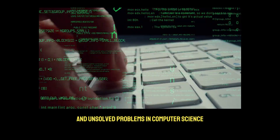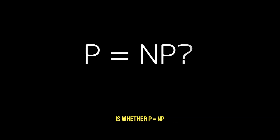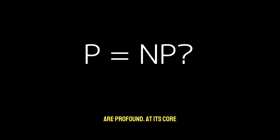One of the most famous and unsolved problems in computer science is whether P equals NP. The equation is simple: P equals NP. However, the consequences of answering this question are profound.